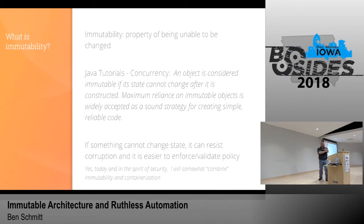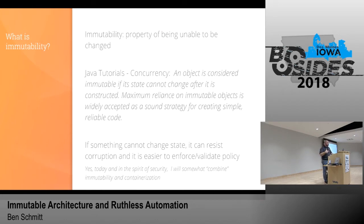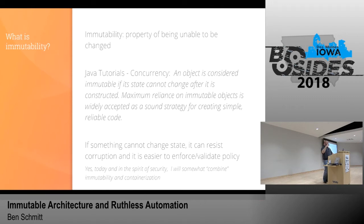What is immutability? It's the property of being unable to be changed. Going back to development languages — Java in particular — an object is considered immutable if its state cannot change after it's constructed. That creates simple, reliable code. That applies to infrastructure as code, which is why this immutable architecture discussion matters. If something can't change, it can resist corruption. You can also more easily enforce validation or policy against it. I'm conflating immutability, containerization, and immutable infrastructure — that's why I'm calling it immutable architecture; each piece plays into what we can do in the future.